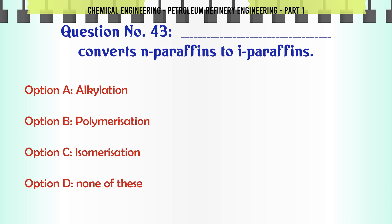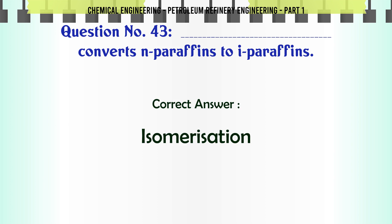Which process converts N-paraffins to I-paraffins? A. Alkylation, B. Polymerization, C. Isomerization, D. None of these. The correct answer is Isomerization.